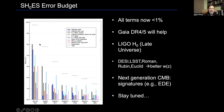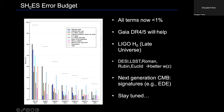We have continued to chip away at our error budget — all terms are now below 1%. There are things on the horizon: Gaia data releases 4 and 5, LIGO contributions, and new missions like DESI, LSST, Roman, and Euclid — all ways of better characterizing the expansion history. Next-generation CMB experiments could see signatures of early dark energy or weird neutrinos. This is an interesting problem worth staying tuned to.